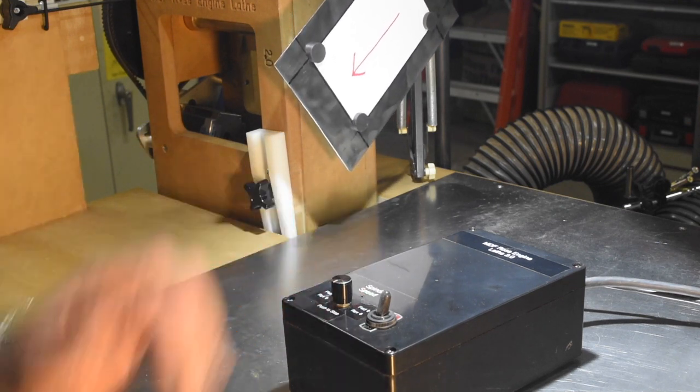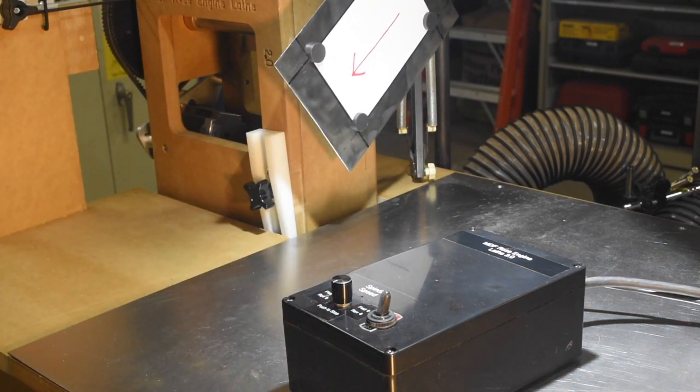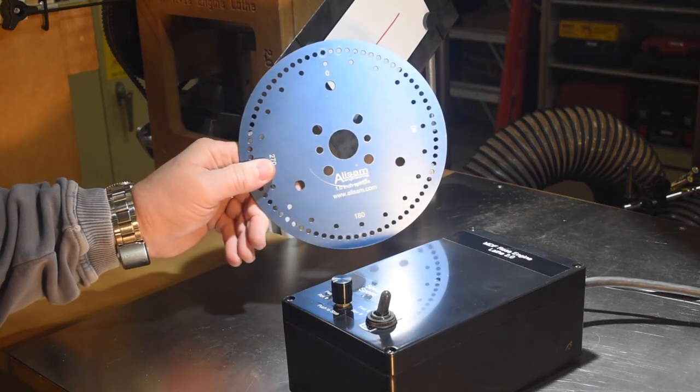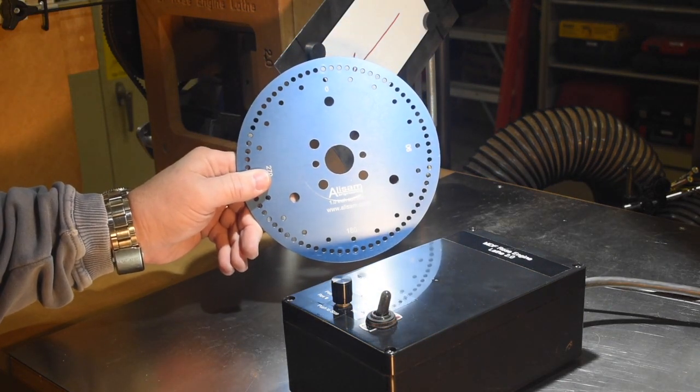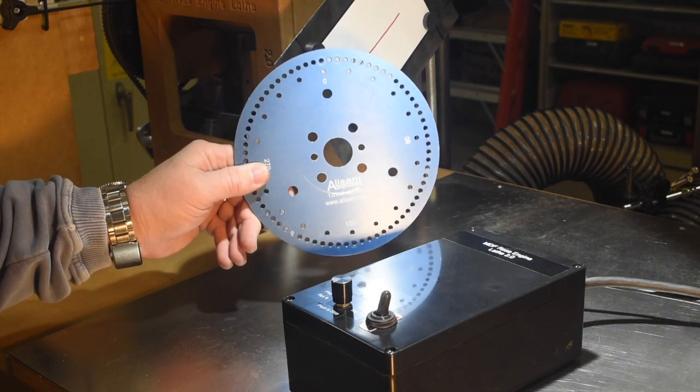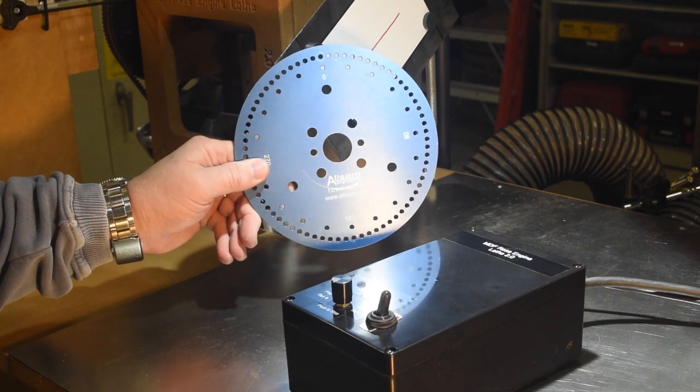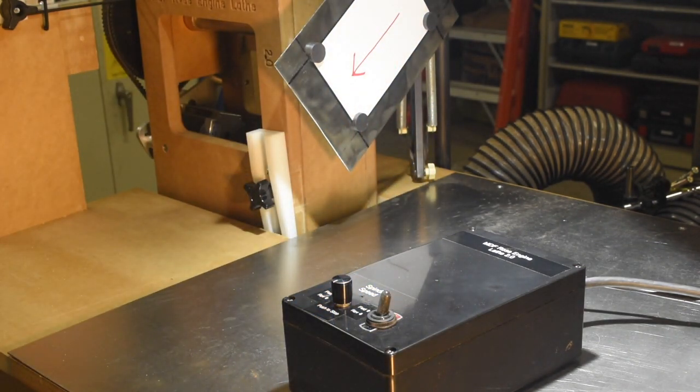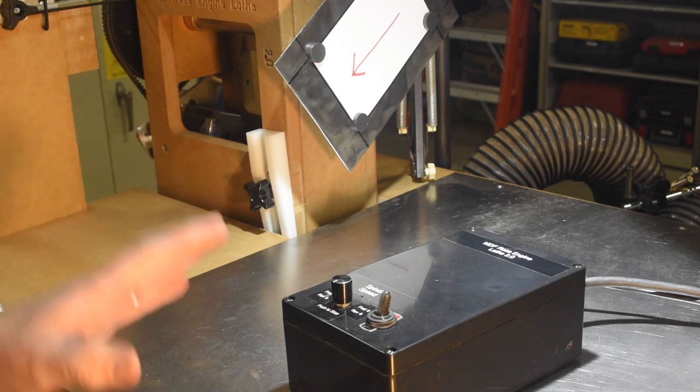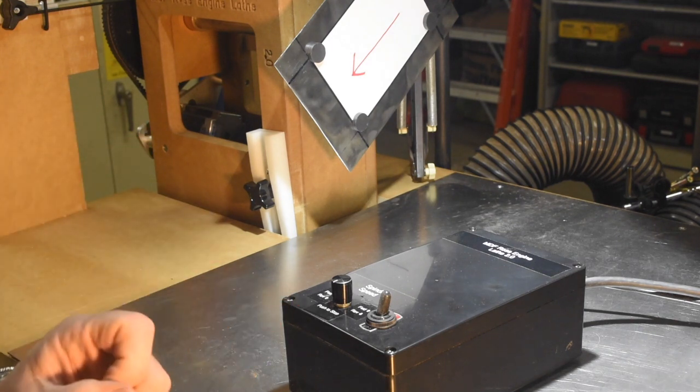And if you want to do any indexing you can disable the stepper motor and just use one of these. This happens to be from Ollie some but you need to use a standard indexing wheel in this approach just like you would with a traditional lathe. At this point I'm going to disconnect this and connect up the other one. So give me a second and I'll be right back.